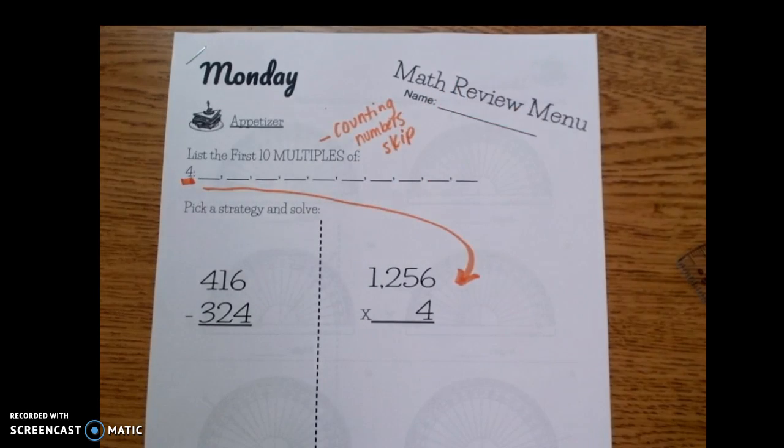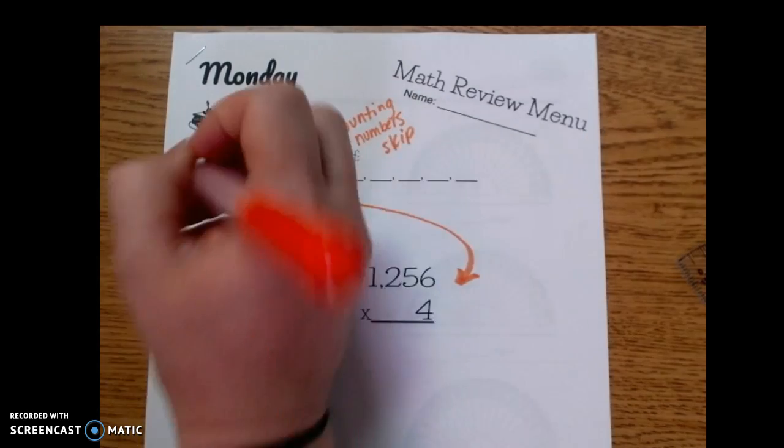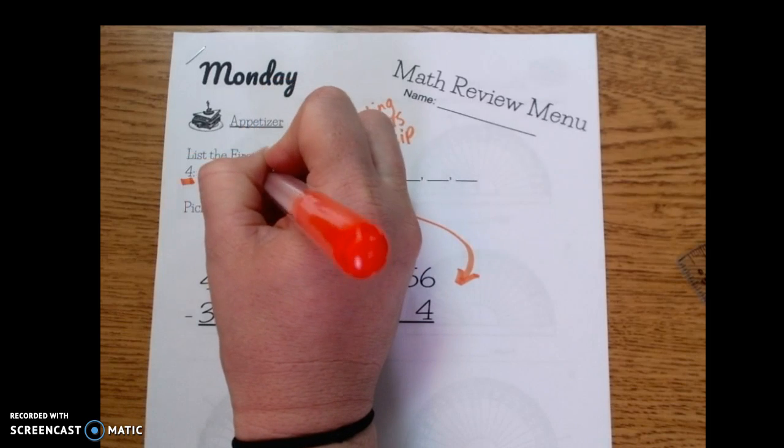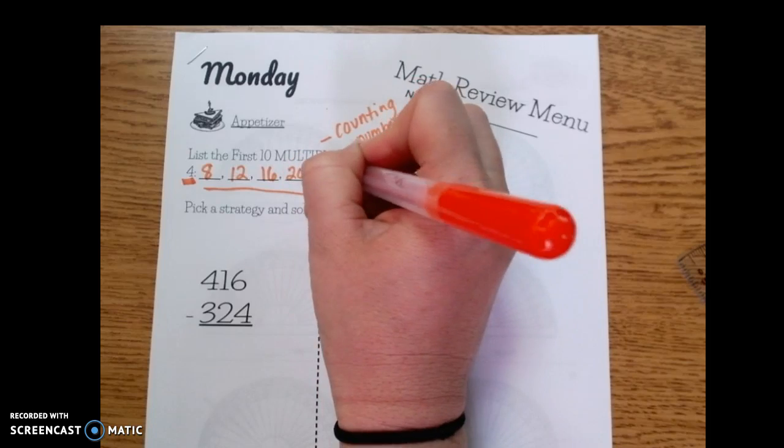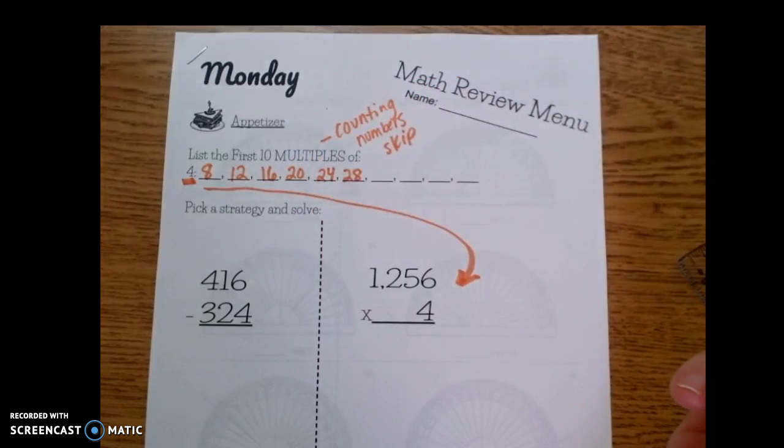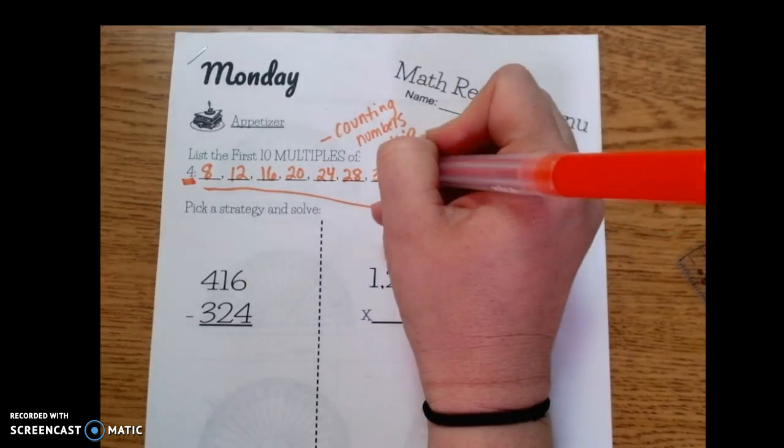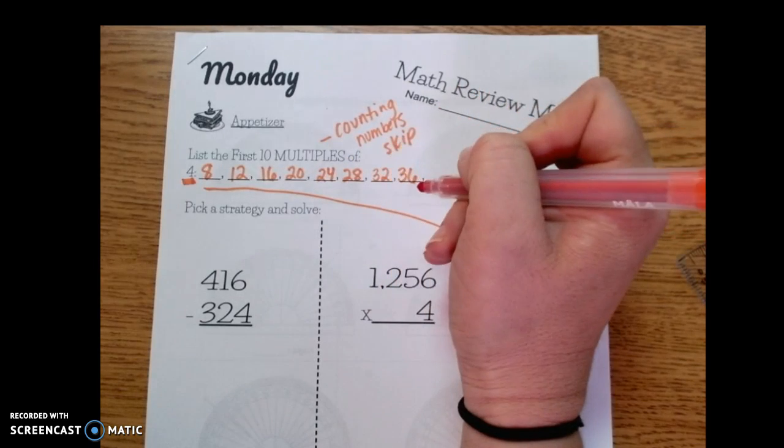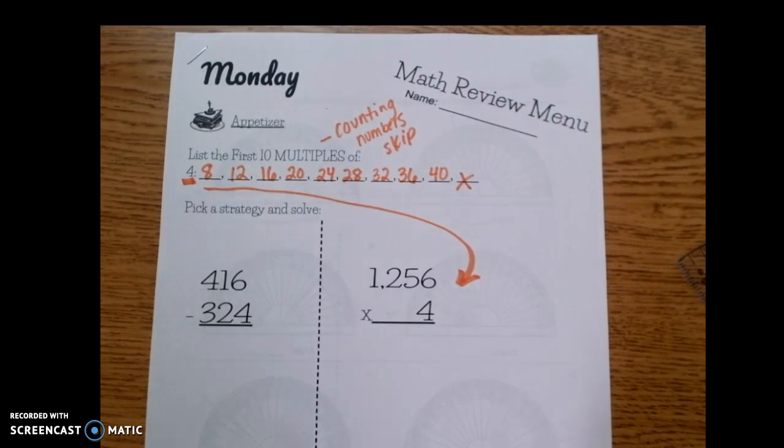Counting numbers or skip counting. So we're going to go ahead and list the multiples of 4. So we have 4, 8, 12, 16, 20, 24, 28, 32, 36, and 40. I accidentally gave you an extra one, just mark that one off.